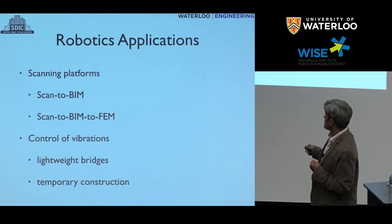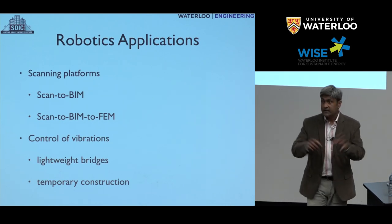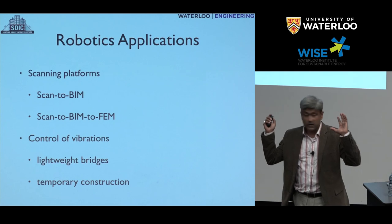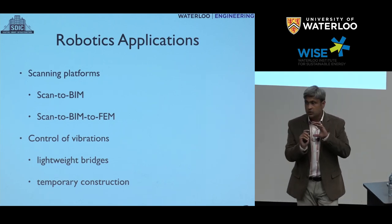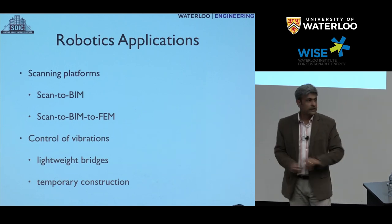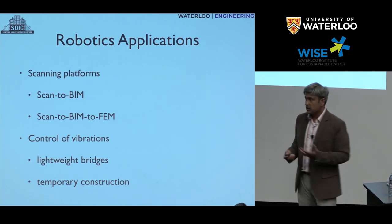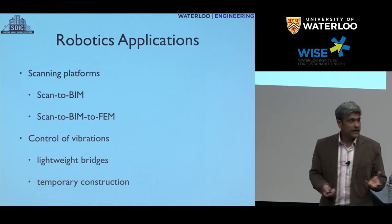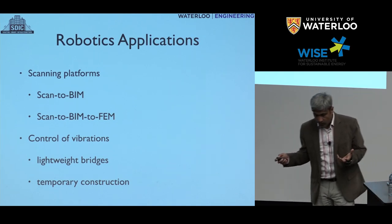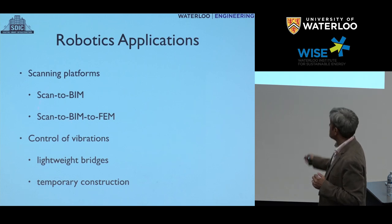We're looking at scanning platforms — scan to BIM, where BIM stands for Building Information Models, which are essentially semantic models. You know what a point cloud is: if you scan an area, you get XYZ coordinates of your surroundings. If you embed other information — this is concrete, this is steel, or this construction element needs to be completed at such-and-such time — that becomes a semantic model with more information than just geometric information. Such rich semantic models have applications in construction, design, and maintenance. One of the things where actualization through robotics can play a big role is going from a simple scan to a semantic model, and then from a semantic model to a finite element model — that would be the holy grail.